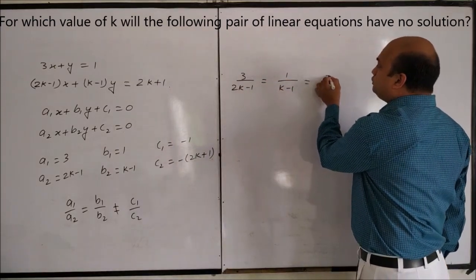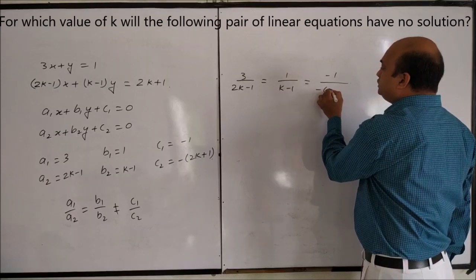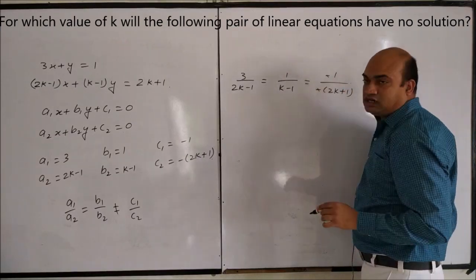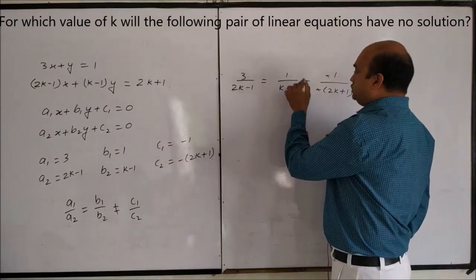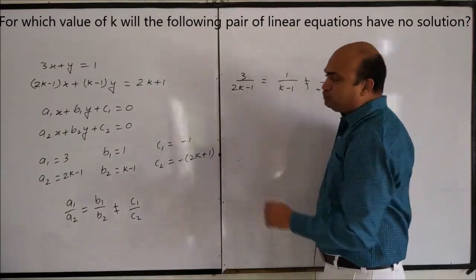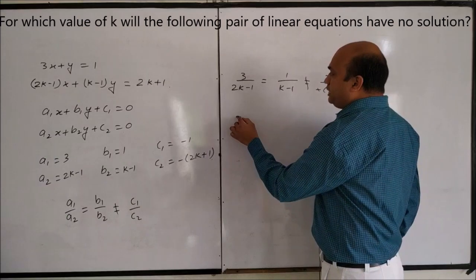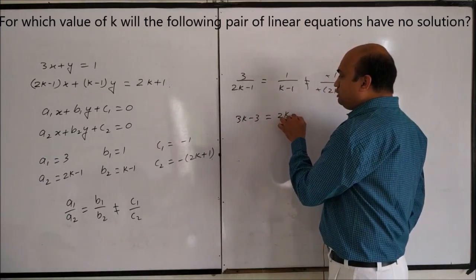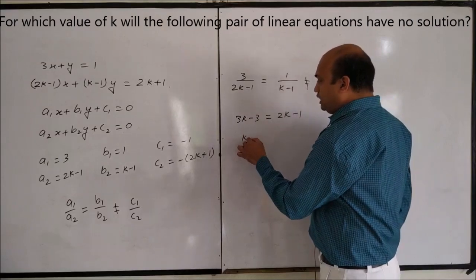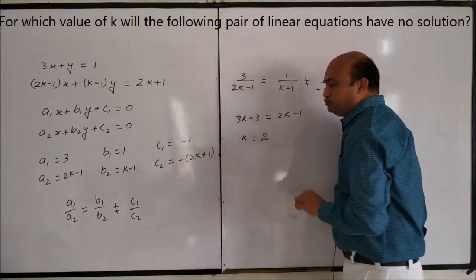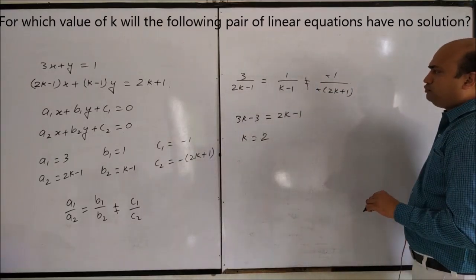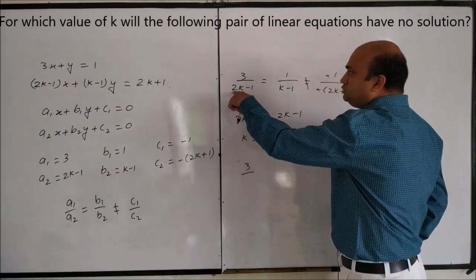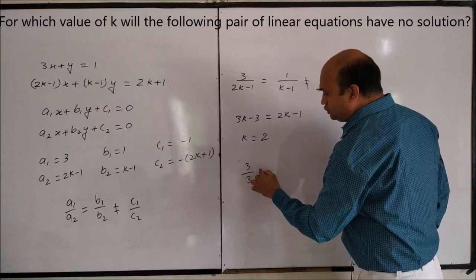This is not equal to minus 1 upon minus 2k plus 1. Taking the first two ratios, we get 3k minus 3 is equal to 2k minus 1, which gives us k equal to 2.